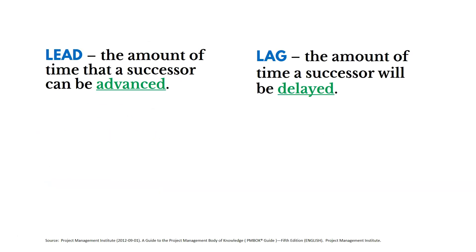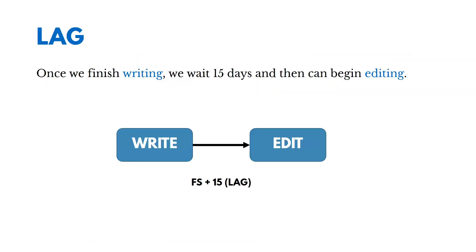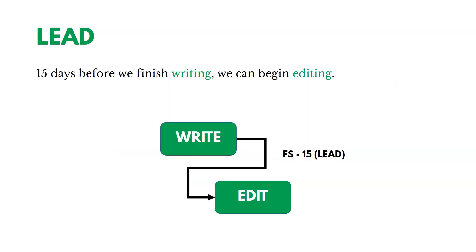A lead is the amount of time a successor activity can be advanced — started early. A lag is the amount of time a successor will be delayed. For example, a lag: once we finish writing, we wait 15 days, then begin editing — that's a finish-to-start with a lag. A lead example: if we have a finish-to-start between write and edit, we might start editing 15 days before we finish writing — starting earlier than normal.